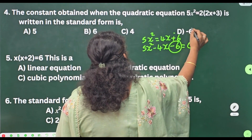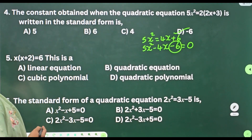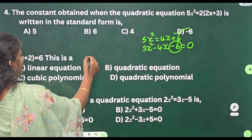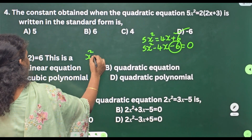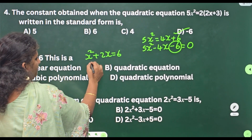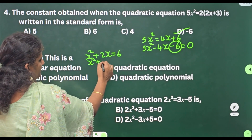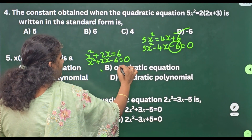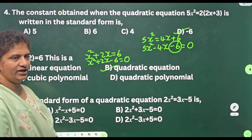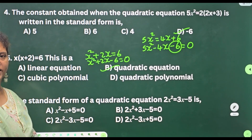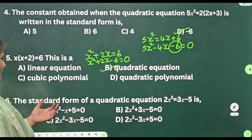Your answer is option D, −6. Fifth one: x(x + 2) = 6 — this is which type of equation? First remove brackets: x(x + 2) = x² + 2x = 6. Bring 6 to this side: x² + 2x − 6 = 0. This is a quadratic equation.